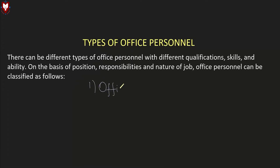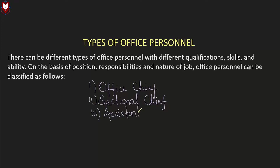Number one: office chief — the topmost position in the organization. Number two: sectional chief — a middle-level position. Number three: office assistant — a lower-level position. In terms of nature of job, the office chief performs managerial work and is responsible for the whole organization. The sectional chief handles section-level responsibilities.